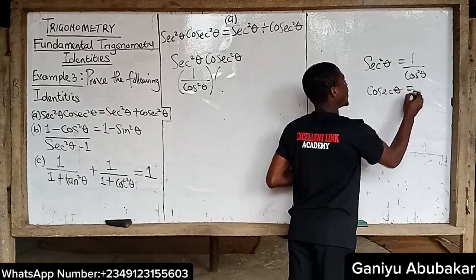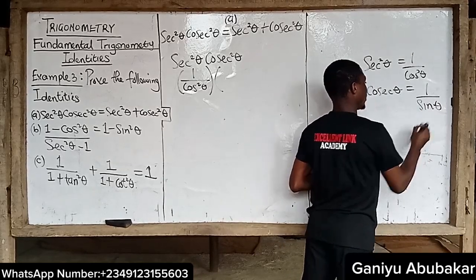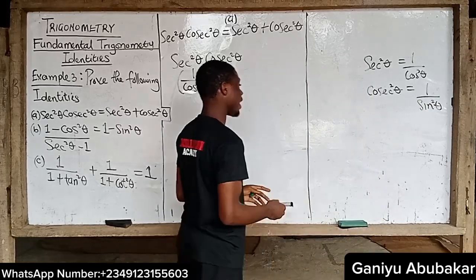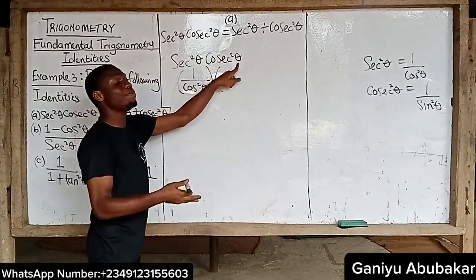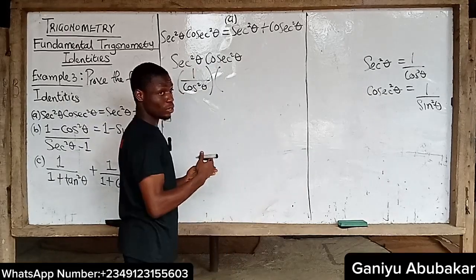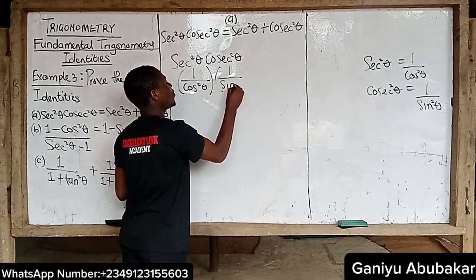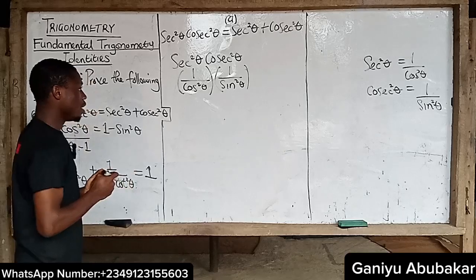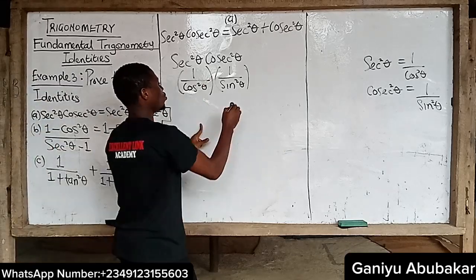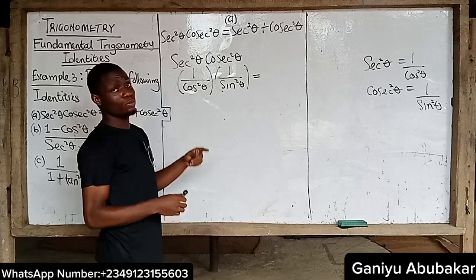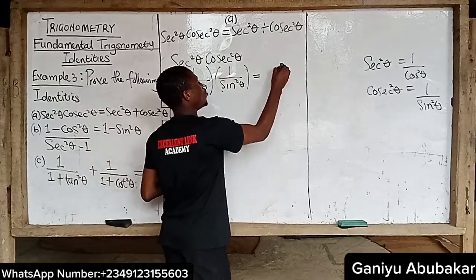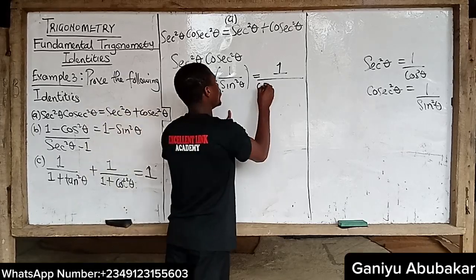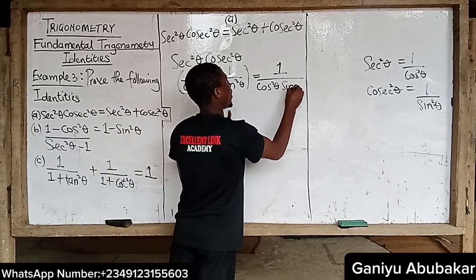For cosec theta, we know that it can be expressed as one over sine theta. Similarly, squaring both sides gives cosec squared theta equals one over sine squared theta. So now I have one over cos squared theta multiplied by one over sine squared theta. Multiplying through: one times one gives one, all over cos squared theta times sine squared theta.